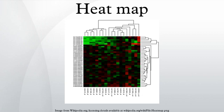Sneath displayed the results of a cluster analysis by permuting the rows and columns of a matrix to place similar values near each other according to the clustering. Jacques Bertin used a similar representation to display data that conformed to a Guttman scale.